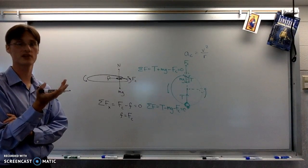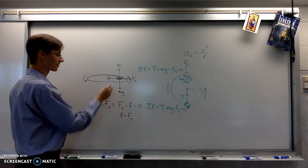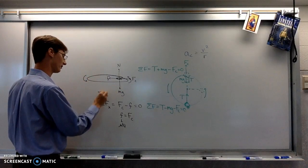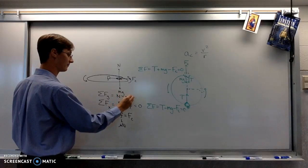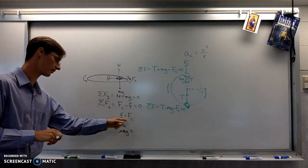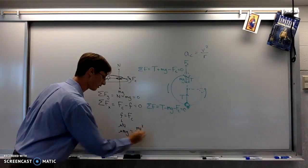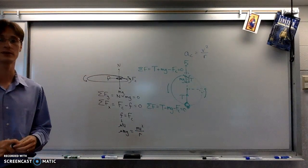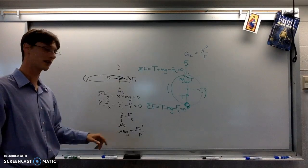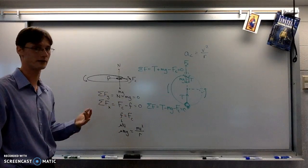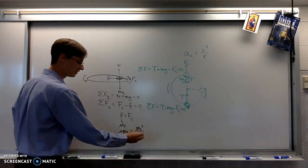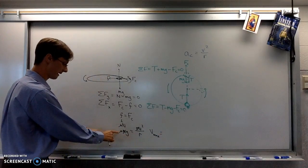That would have to be true in order for it to stay in a circle. For the friction force, friction equals mu times normal force. For the y-axis, the sum of forces would be N minus mg equals zero, so that means friction is mu times mg. The centrifugal force equation is mv squared over r. From there you could solve for things like what coefficient of friction is needed for it not to slide, or given a coefficient of friction, what is the maximum speed — the m's cancel out and you can solve for v.